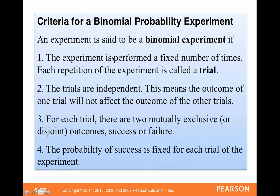The other key thing is that we perform the experiment a fixed number of times. We can say that we sampled 20 people and the fixed number of times is 20, or if we looked at 10 different buses and saw if they were late or not, then that's a fixed number, and we call each one of those a trial. The second thing is that the trials have to be independent of each other — the outcome of one trial will not affect the outcome of subsequent trials. And then the probability of success is fixed for each trial of the experiment.